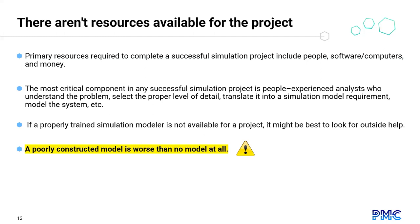Checkpoint four: when there aren't resources available for the project. We need experienced people, software, computers, and money to complete a successful simulation project. The most critical component is people — experienced programmers or analysts and engineers who understand the problem, select the proper level of detail, and can translate it into the simulation model. If a trained simulation analyst is not available, it may be best to look for outside help. A poorly constructed model is worse than no model at all, because flawed results may be used anyway.